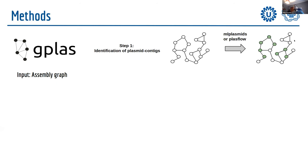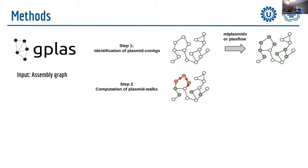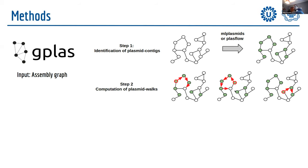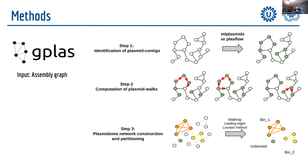Given the assembly graph as input, GPlas first identifies plasmid-derived contigs (shown in green) using either mlplasmid or PlasmidFlow depending on the selected species. It then generates a series of plasmid bins by connecting plasmid-derived contigs based on similarity of read coverage. This process is repeated starting from each predicted plasmid contig, and based on how frequently two contigs are found on the same walk, GPlas generates a plasmid co-occurrence network, then partitions that network using different algorithms to produce final plasmid bin predictions.